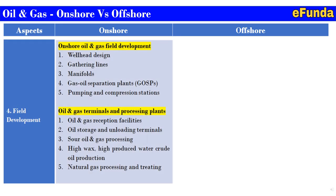Fourth, field development. Onshore oil and gas field development consists of: first, well design; second, gathering lines; third, manifolds; fourth, gas oil separation plant (GOSP); fifth, pumping and compression station. Oil and gas terminal and processing plant includes: first, oil and gas reception facilities; second, oil storage and unloading terminal; third, sour oil and gas processing; fourth, high wax, high produced water crude oil production; fifth, natural gas processing and treating.